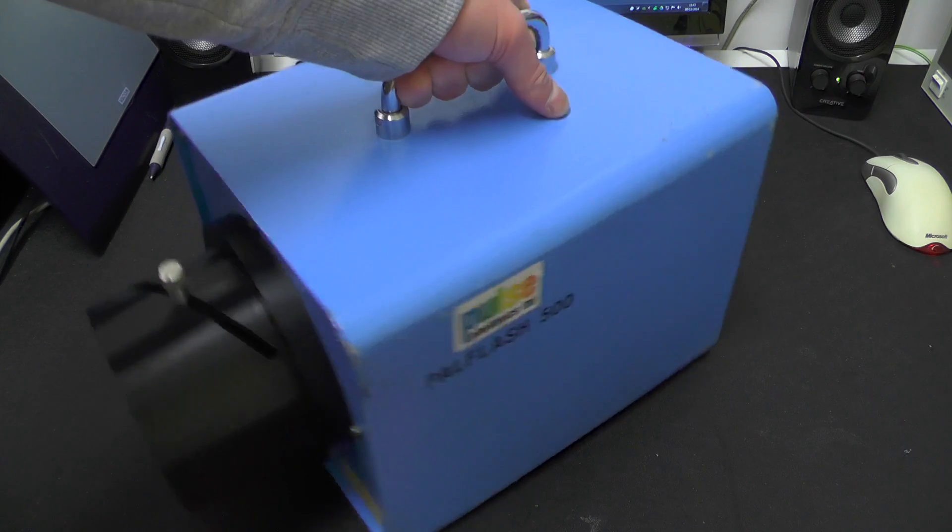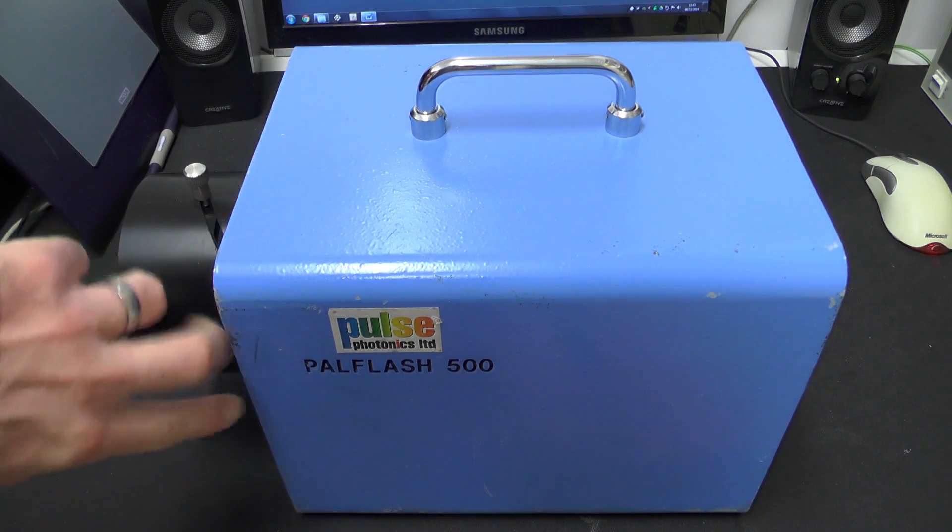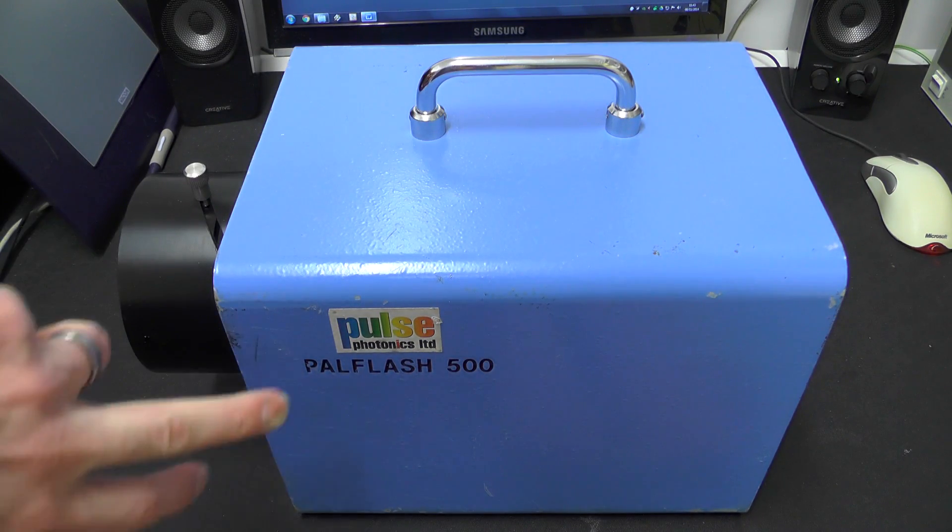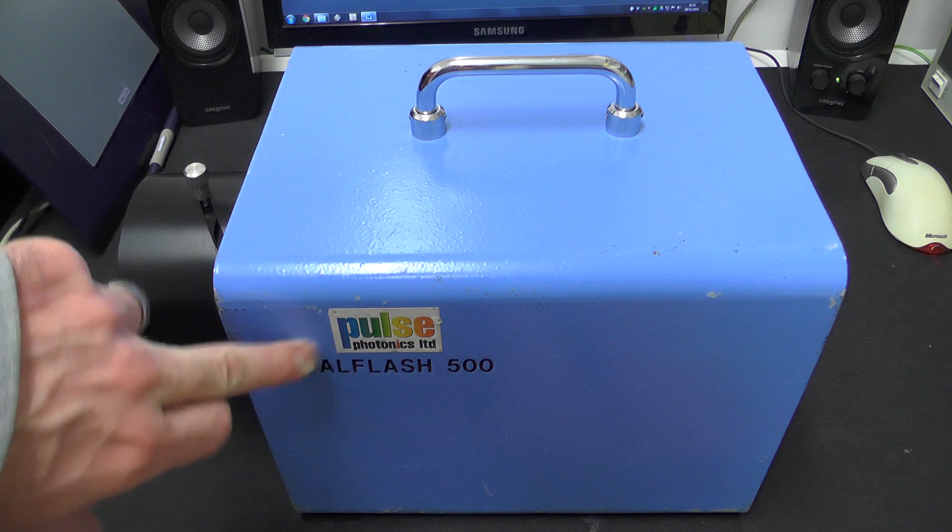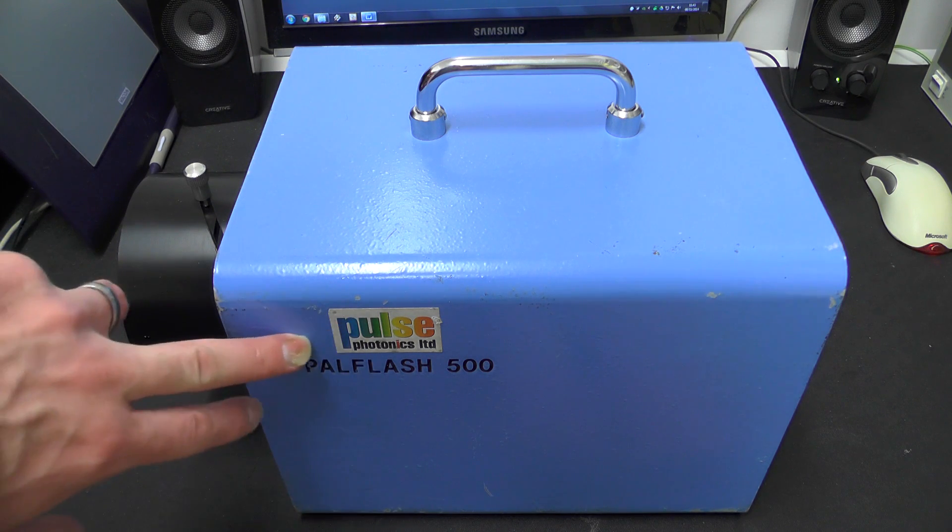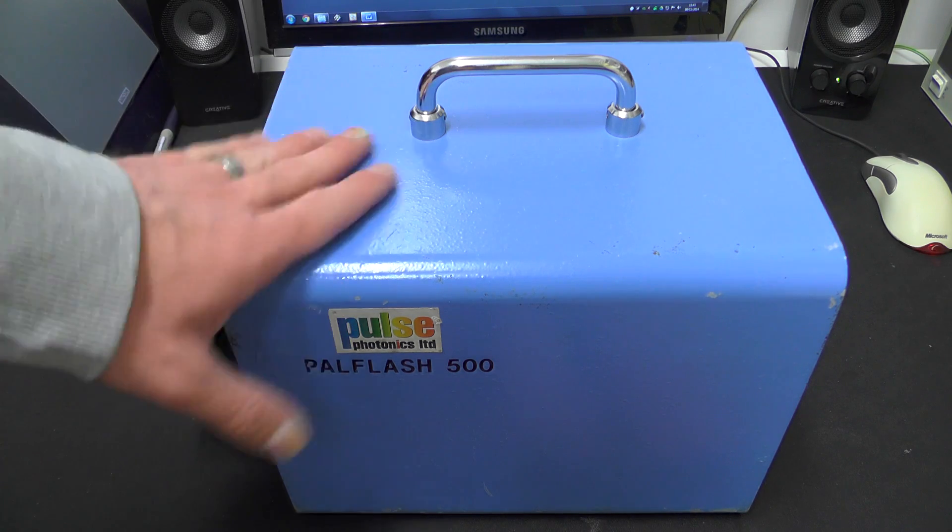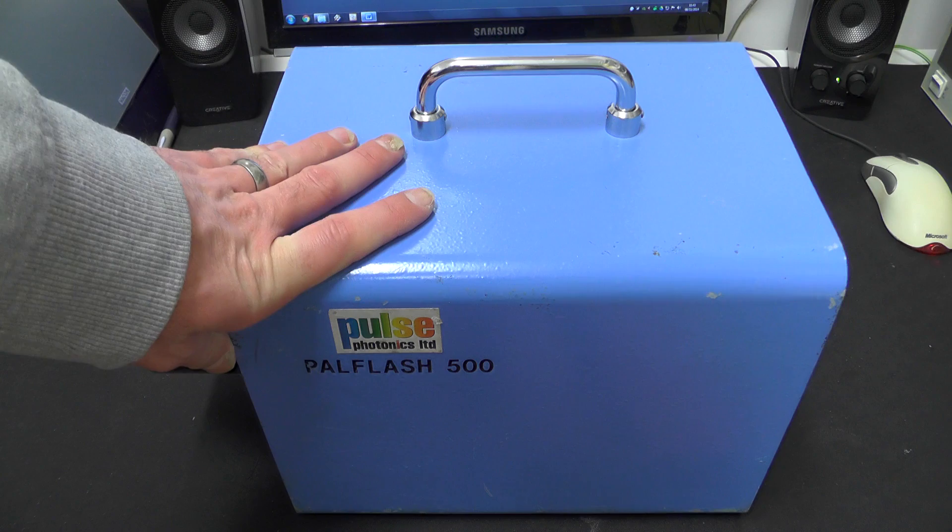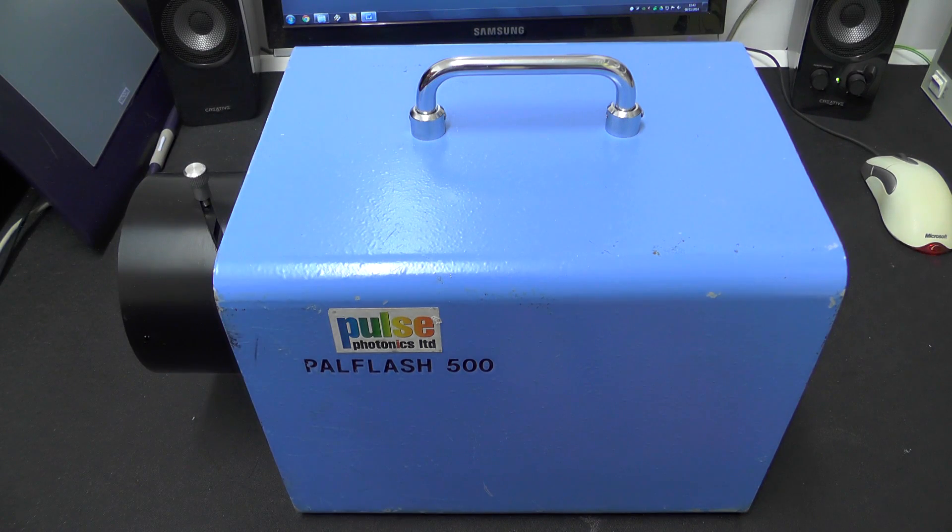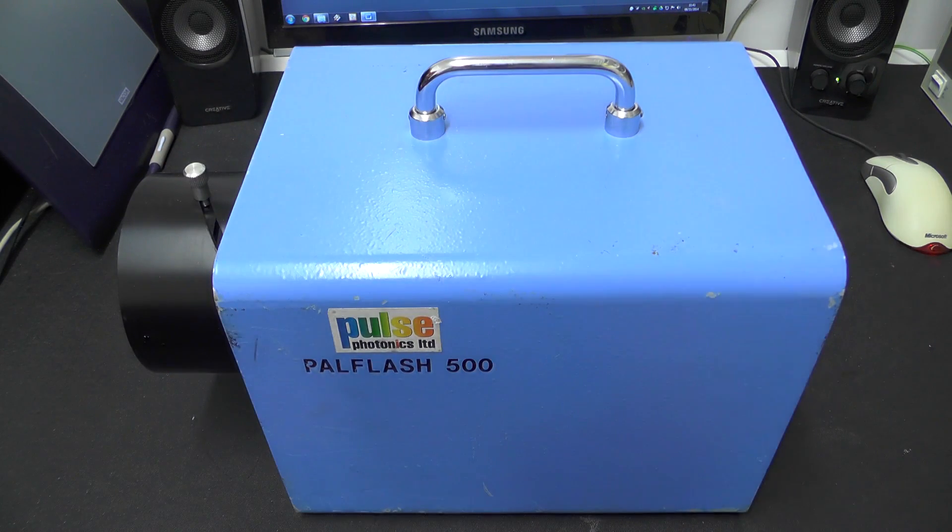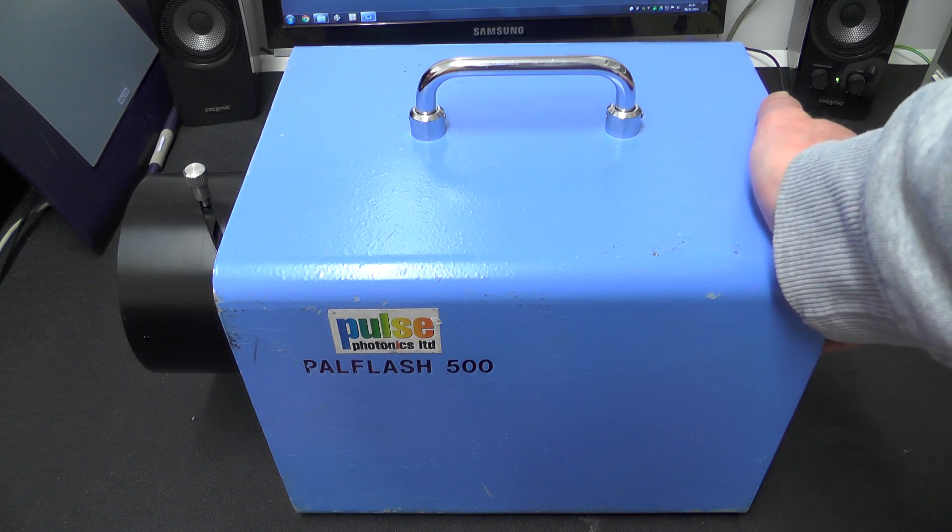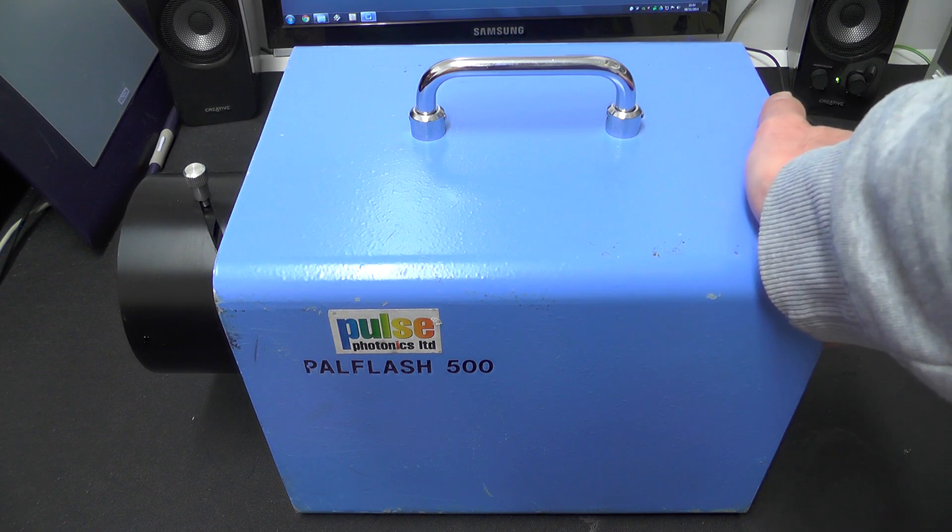So what this actually is, as you can see on the side here, it's called a PAL Flash 500. It's manufactured by Pulse Photonics Limited which is a UK company which doesn't really have much of a presence on the internet. There's not a huge amount of information I've managed to find out about this. But after some googling around, it was revealed that this is actually a short duration pulse light source.